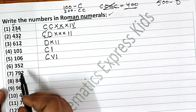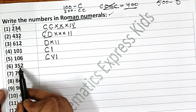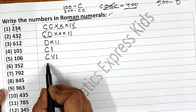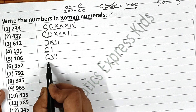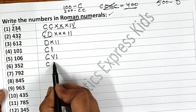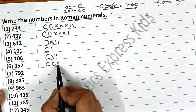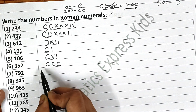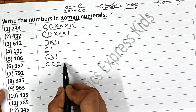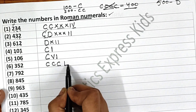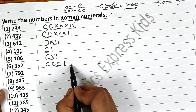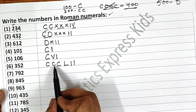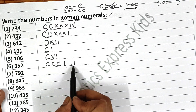Now 352. 300 means 3 times 100, so CCC. Now 50 means L, and then 2 means I and I. So 352 is CCCLII.